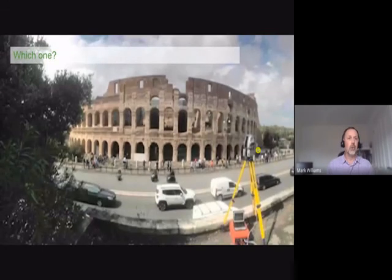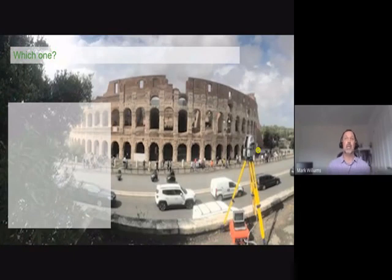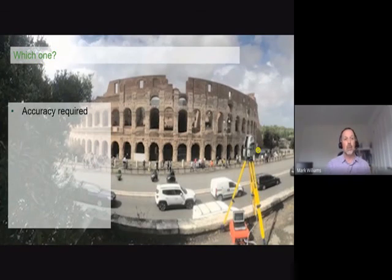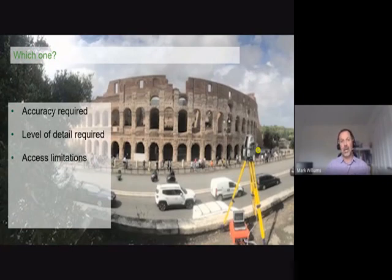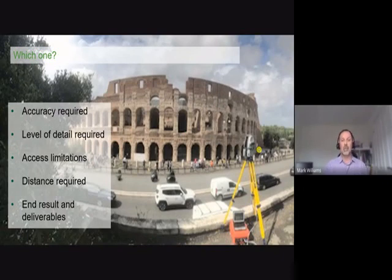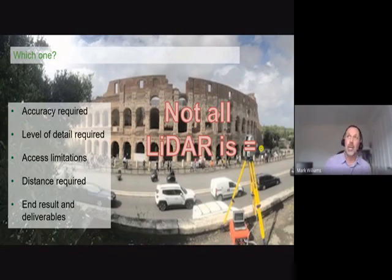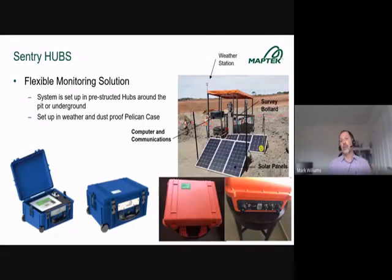Ultimately, which type of LIDAR do you use? In the modern age, with an iPhone you can do structured light cheaply for a few dollars. Selection criteria include: what level of accuracy is required, how much detail is needed, are there access limitations, what distance is required, and what are the end results and deliverables. Not all LIDAR is equal — just as not all radar is the same; a fighter plane's radar differs from that used to monitor an open pit.